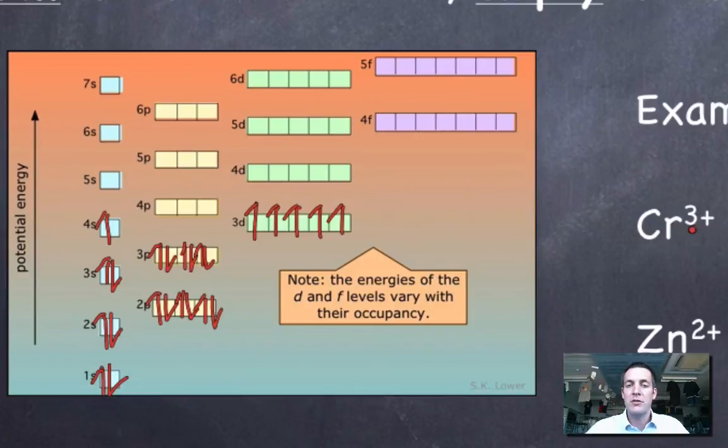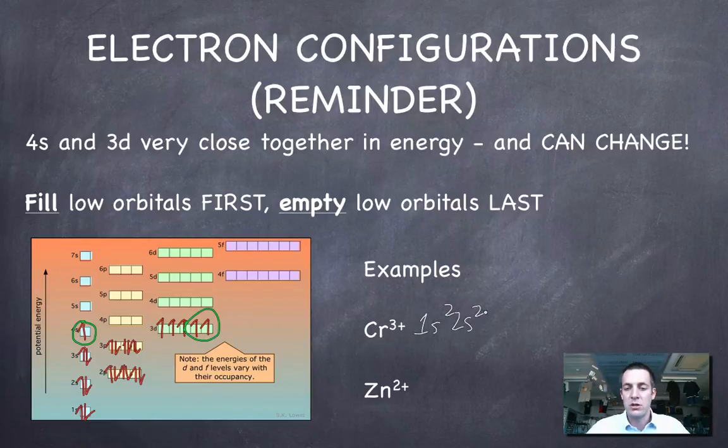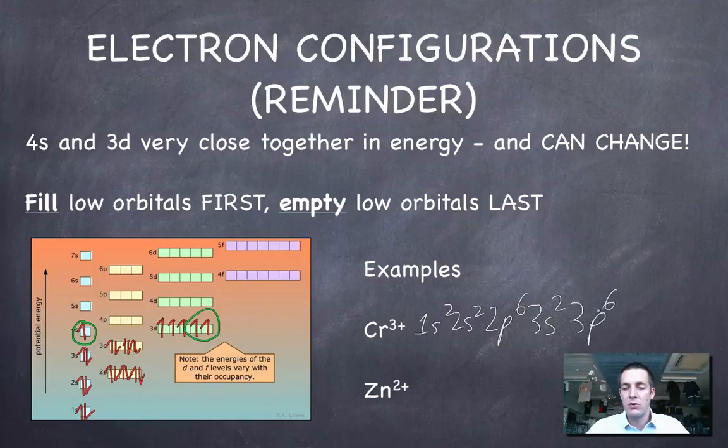Now if chromium 3 plus or if a chromium atom loses 3 electrons to become chromium 3 plus, which electrons will it lose? Well remember that the 3d orbitals are now lower in energy than 4s so it's always the 4s electrons that get lost first. So chromium will lose that electron and 2 of these and it will end up with an electron configuration of 1s2, 2s2, 2p6, 3s2, 3p6. All the 4s electrons are gone and we're left with 3d3.